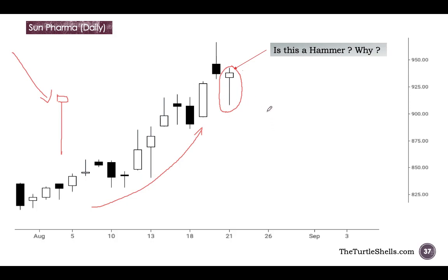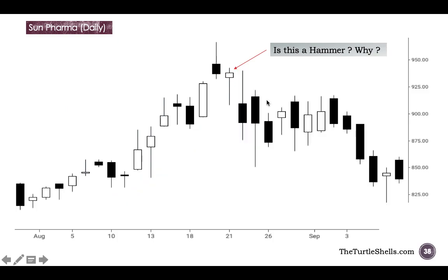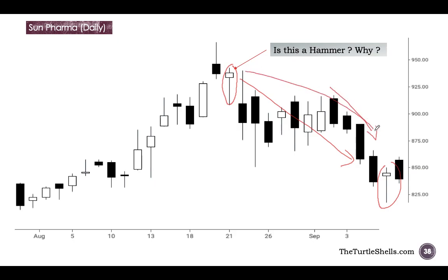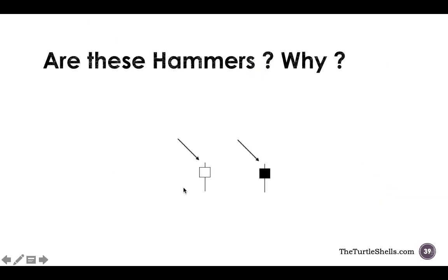This is a daily chart of Sun Pharma. Imagine you do not understand how to use the hammer correctly, you look at a candle and say this is a hammer and take a long position — that is your loss, because it is not a hammer. However, this one is a valid hammer because it is coming after a nice downtrend; the lower shadow is more than twice the height of the real body and the real body is near the upper end of the trading range. Also, one candle is clearly not a hammer because the lower shadow is not more than twice the height of the real body. We need to correctly identify what is a hammer and what is not.